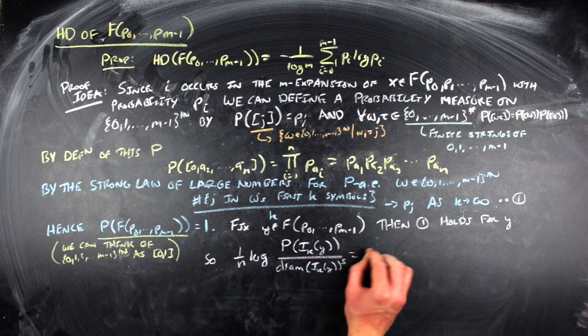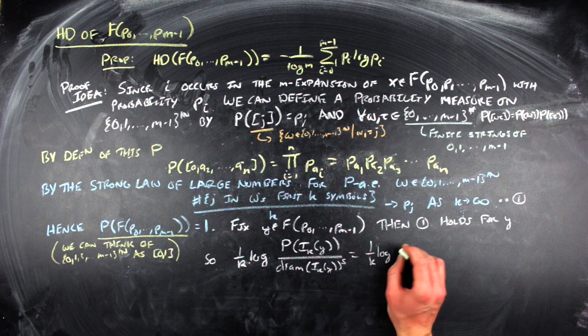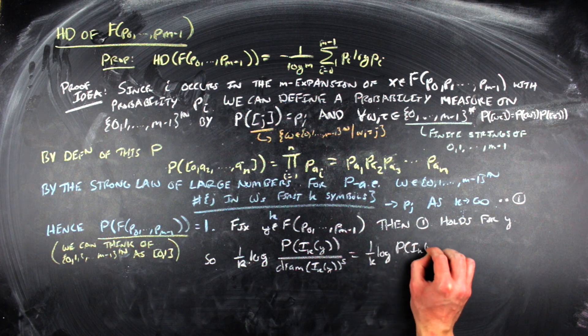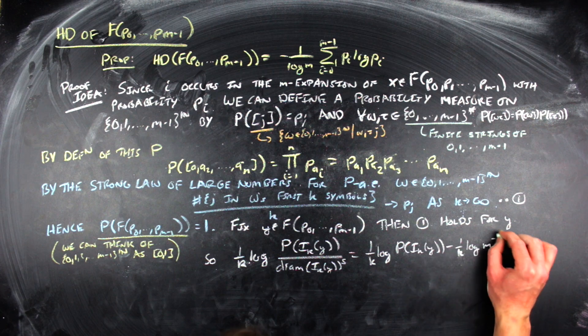Now, since Y is within F of the probability vector, we have the convergence thing that we had from the strong law of large numbers happens for Y, so we can look at the quantity 1 over N log of the probability measure of that interval divided by the diameter of that interval to the S power.